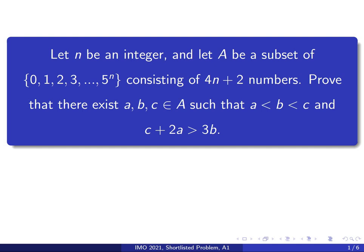The problem goes like this: let N be an integer and let A be a subset of the set of integers from 0 to 5 to the power of N, consisting of 4N plus 2 numbers. Prove that there exist A, B, C in A such that A is less than B less than C, and C plus 2A is greater than 3B.